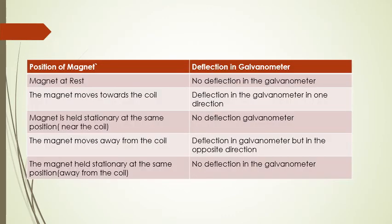To summarize the cases: magnet at rest — no deflection; magnet moved toward the coil — deflection in one direction; magnet held stationary — no deflection; magnet moved away from the coil — deflection in the opposite direction; magnet held stationary again — no deflection.